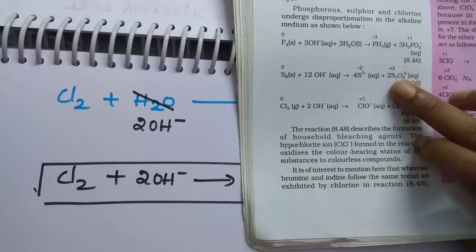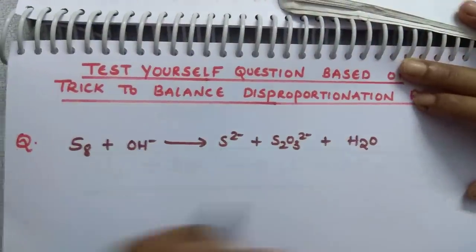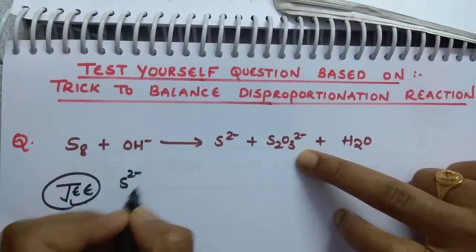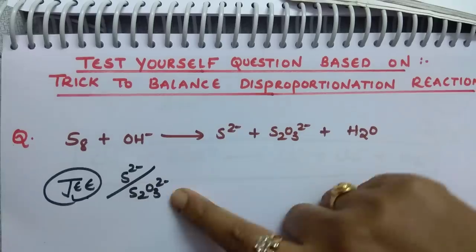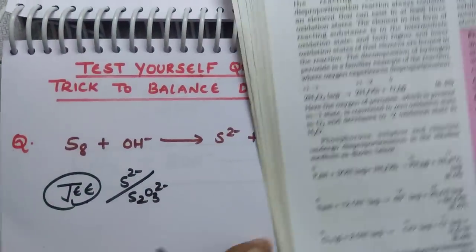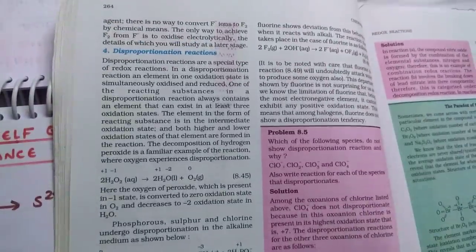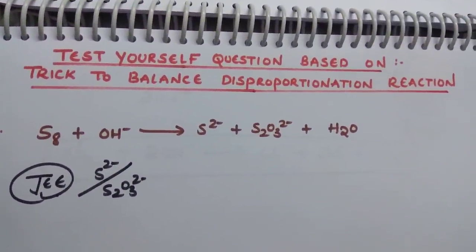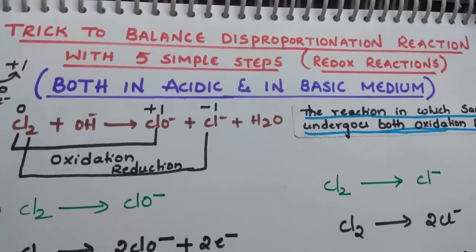Now I am going to give you a test-yourself question — don't see the answer, just try it yourself. In JEE-type questions, they ask for the ratio of coefficients, for example the ratio of S²⁻ to S₂O₃²⁻. If one coefficient is 6 and the other is 2, the ratio is 3 — that is your answer. Try the question and comment your answer. There are about 5 examples in total; we finished 2, so try the remaining 3. If you found this video helpful, please click like. My name is Komali, I am your chemistry mentor. Thanks for watching — your love and support are precious to me.